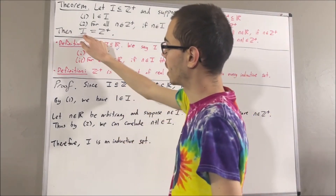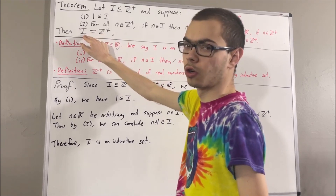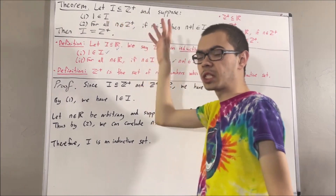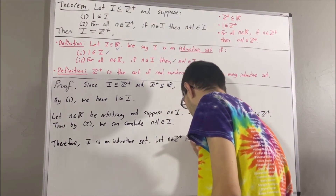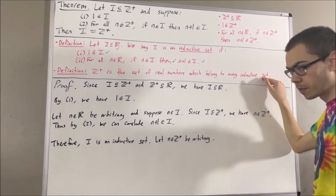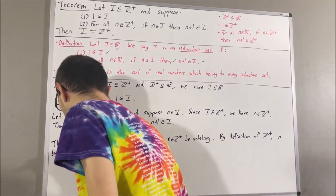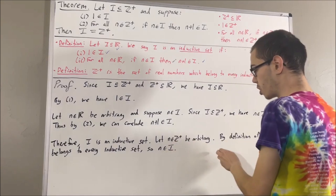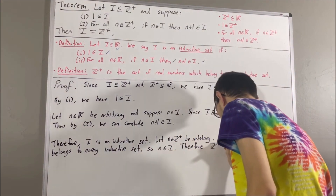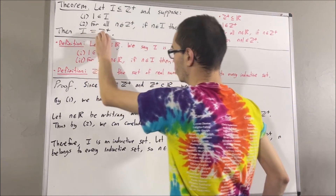Now remember, the whole goal has been to show that i is equal to the set of positive integers. To show that, we can show that i is a subset of the positive integers and the positive integers is a subset of i. Well, we know that i is a subset of the positive integers, so all that's left to show is that the positive integers is a subset of i. To prove that, let's consider an arbitrary positive integer — I'll call it n. By definition of the positive integers, since n is a positive integer, this tells us that n belongs to every inductive set. So in particular, n must belong to the inductive set i. So we have shown: if n is any positive integer, then n is an element of i, meaning the positive integers is a subset of i. Since i is a subset of the positive integers and the positive integers is a subset of i, that's enough to say that i is equal to the set of positive integers.